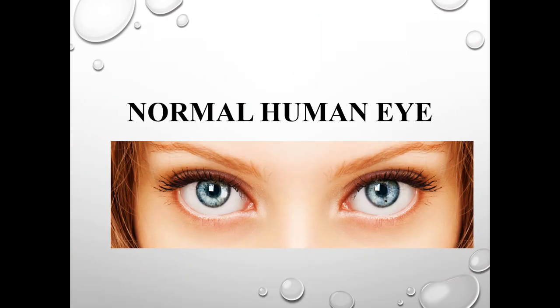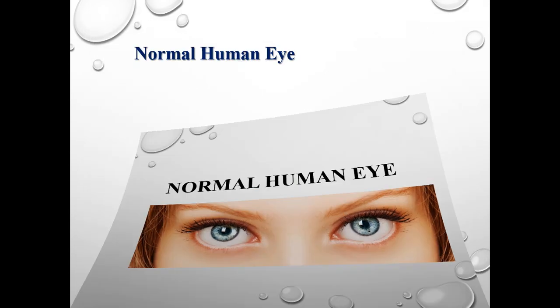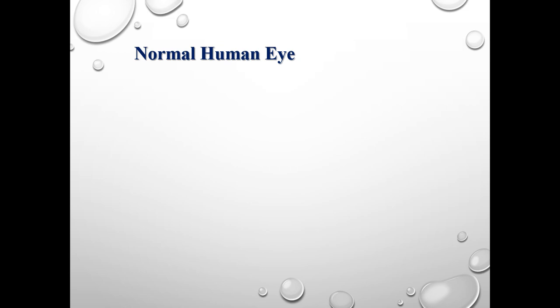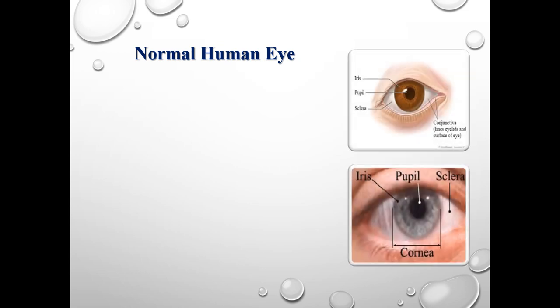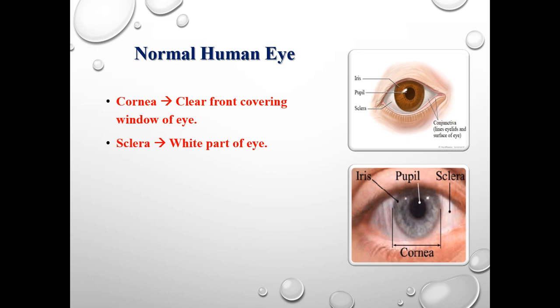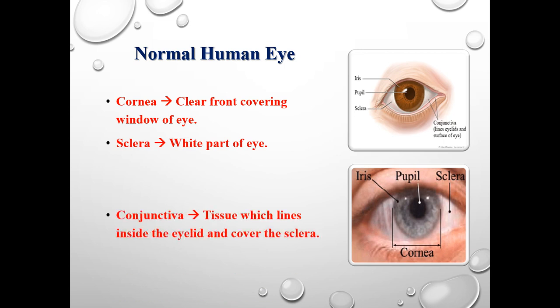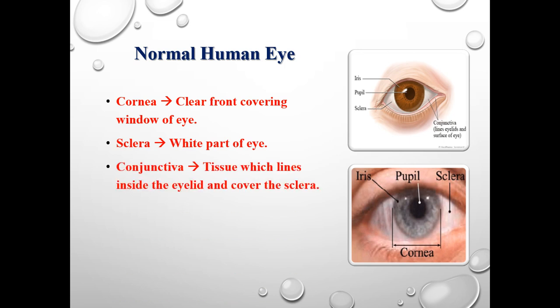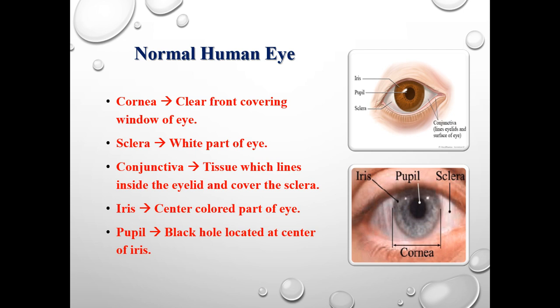I want to give some introduction about the human eye, its parts and its functions. Parts of the human eye which can easily be seen from the surface are cornea, sclera, conjunctiva, iris and tissue, as seen in the figure. The front covering of the eye is called the cornea. The whitish part of the eye is called the sclera, which is surrounded by tissue called the conjunctiva, and at the center is the colored part called the iris, in which the dark colored pupil is located.